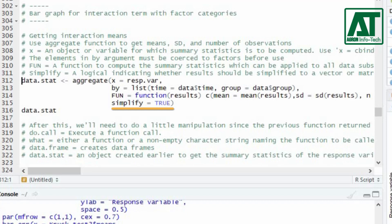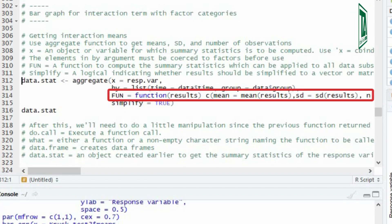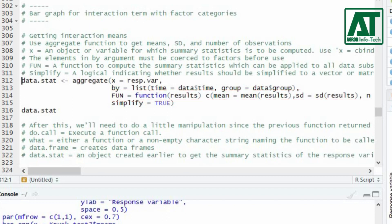Simplify is a logical indicator. True value indicates the results will be simplified to a vector or matrix. Fun represents a function used to compute the summary statistics and can be applied to all the data subset. Use c argument in function to get means, standard deviation, and number of observations from the analysis model applied.